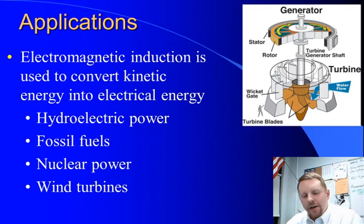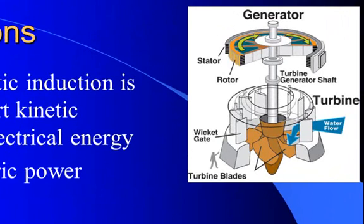Applications of this are in generators. This is how we convert kinetic energy into electrical energy. We use these with hydroelectric power, fossil fuels, nuclear power, wind turbines. If you look over on the right, we have a water turbine. The general idea is water comes in, turns that fan, and as that fan spins, it spins this rotor on top, and we have a stator there. Now the rotor either has coils of wire or magnets, and the stator has the opposite. So you're moving wires in a magnetic field to induce a potential difference. You're turning that kinetic energy into electrical energy.